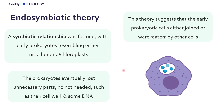These prokaryotic cells — the mitochondria and chloroplasts that were originally eaten or joined by other prokaryotic cells — eventually evolved to where they lost unnecessary parts of their original prokaryotic cell form, such as their cell wall and some of their DNA, because these were no longer needed now that they were living inside a host cell.